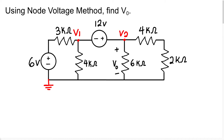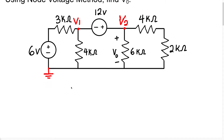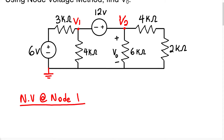Once I have the voltages at each of these nodes, I'm then able to find anything else I would like in this particular circuit. So let's begin — we're going to write a node voltage equation at node 1. When we write a node voltage equation, we're going to assume the current is flowing away from this node.